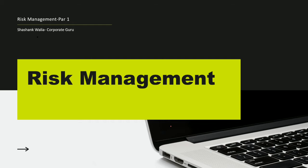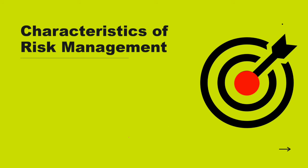Let's start with risk management. First, we will talk about the characteristics of risk management. What is risk management? It is the primary objective of security — it is the number one objective of any physical security setup. If you want to start a new security program, risk management is the primary objective of that security setup.